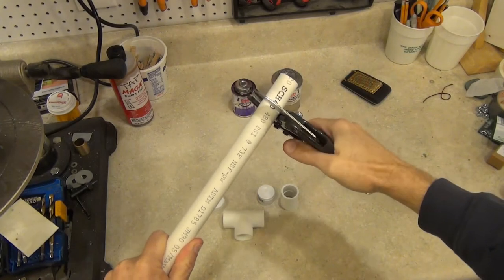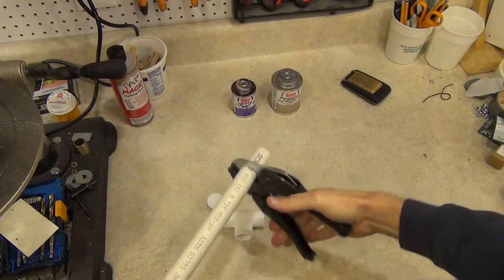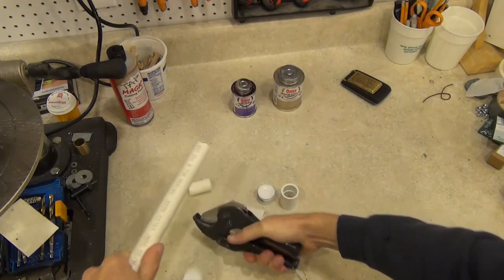First, cut two short pieces of PVC pipe. I cut mine about one and a half inches long, but you can cut them longer if you want a longer handle.